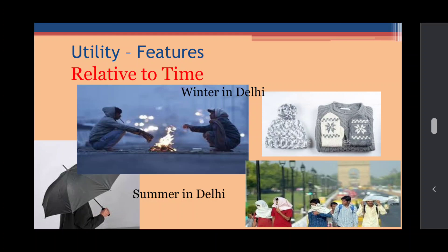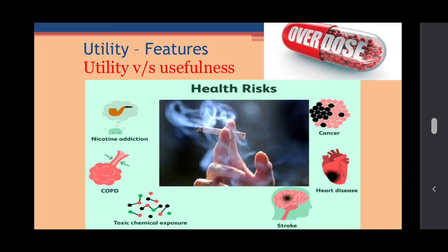Utility is relative to time. Umbrellas have no utility in winter season. Similarly, in warm weather, if you use woolen clothes you will not get a lot of satisfaction or utility. So utility is related to time — the utility of a commodity changes from time to time.